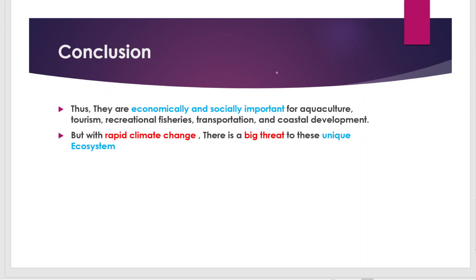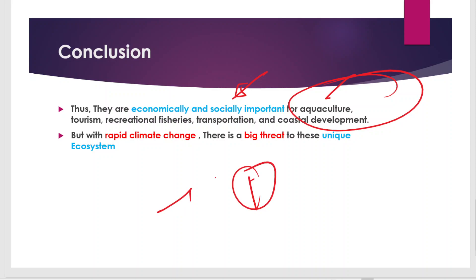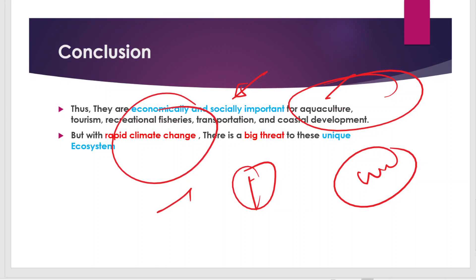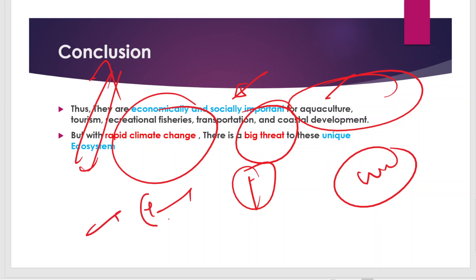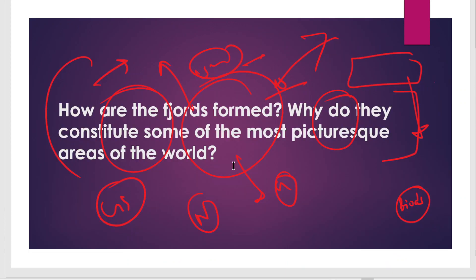In conclusion, fjord regions are economically and socially important — whether for aquaculture, tourism, recreational fisheries, transportation, or coastal development. Remember to give a geographical answer by linking to current issues: climate change is rapidly influencing these ecosystems and poses a big threat to these unique environments. Hope you understood the formation and the basics of the fjord. This is the end of this question — we will be meeting next time. Thank you.